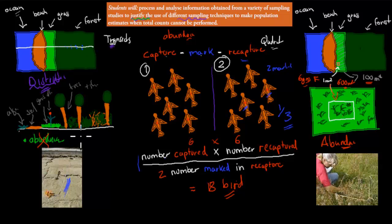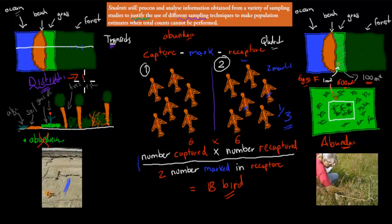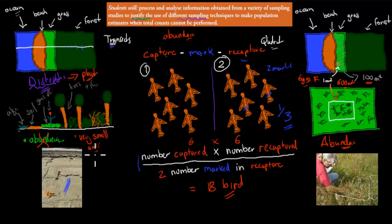Transects are also bad for measuring distribution of animals. Think about a fox — if you put a string there, it's just going to walk away. So transects are only really useful for measuring distribution of plants or very slow-moving animals like snails. Anything that can move away will move away.